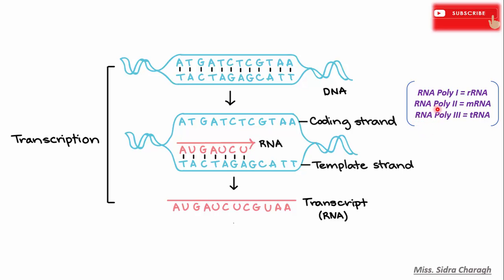But in eukaryotes there are three types of RNA polymerase enzymes. RNA polymerase I is involved in the synthesis of ribosomal RNA, RNA polymerase II is involved in the synthesis of messenger RNA, and RNA polymerase III is involved in the synthesis of transfer RNA.